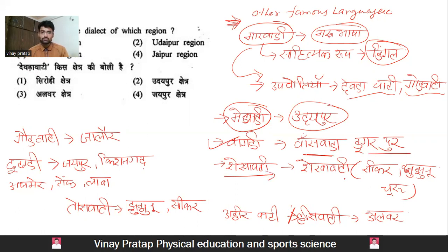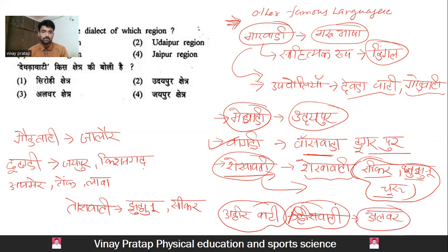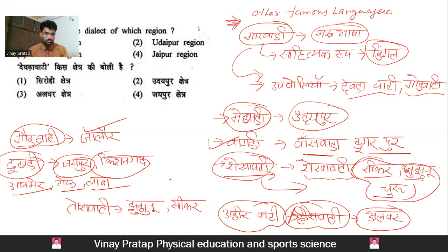Godwati language is also discussed. Regarding the regional area — Seekar, Jhunjhunu, and Churu. Now talking about Ahirvati boli, it is also called Haasivati. It is also called Hiravati — another name for it — and it is widely spoken in the Alwar region. Then, Godvati language is spoken in Jalor. Talking about Dundadi, it is spoken in Jaipur and Kisangarh; and its speakers are in Ajmer, Tonk, and Lava region. Last important boli — Toravati — is the main dialect of Jhunjhunu and Seekar region.